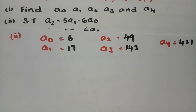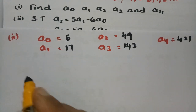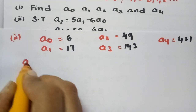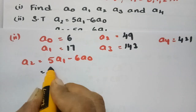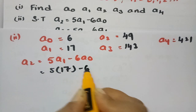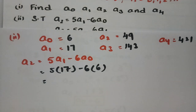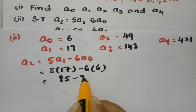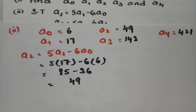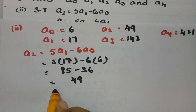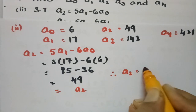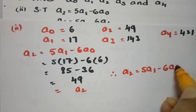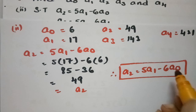We have to show that a_2 equals 5a_1 minus 6a_0. Substituting the values: 5 times 17 minus 6 times 6, which is 85 minus 36, equals 49. And 49 is exactly a_2. So LHS equals RHS, therefore a_2 equals 5a_1 minus 6a_0 is verified.